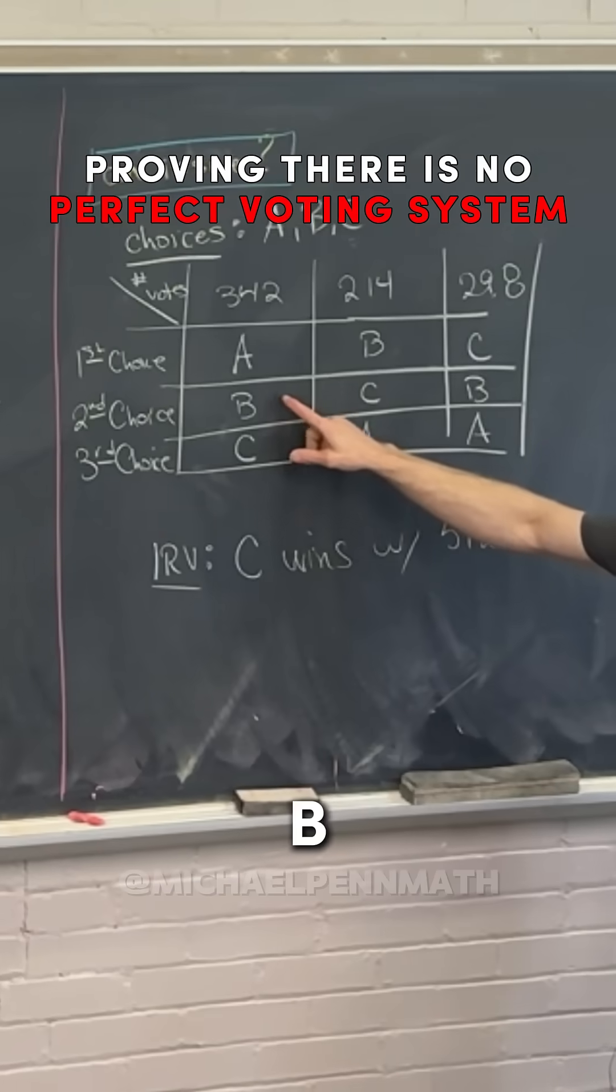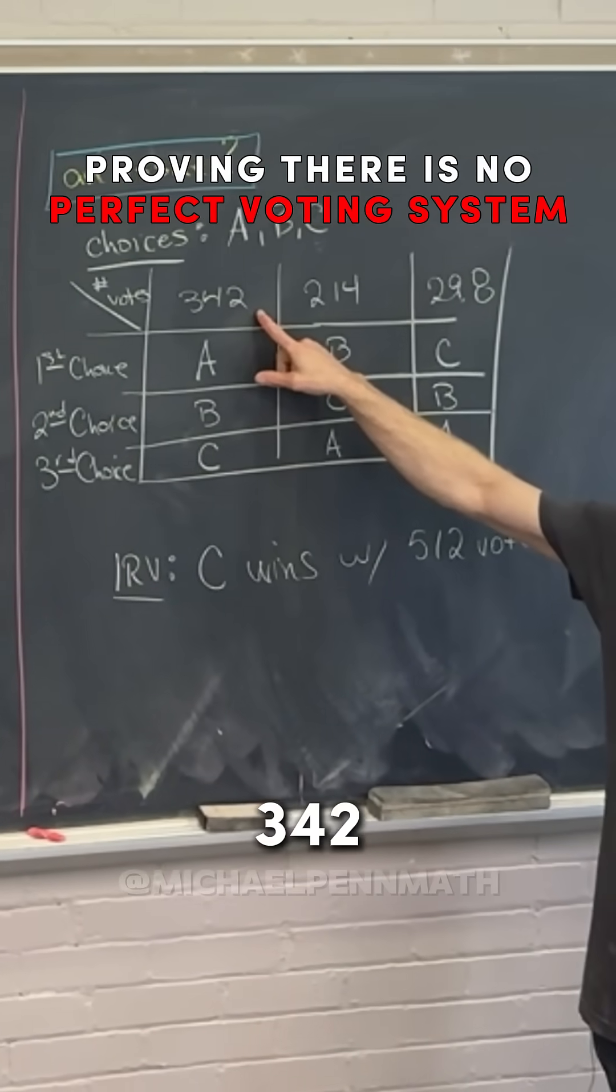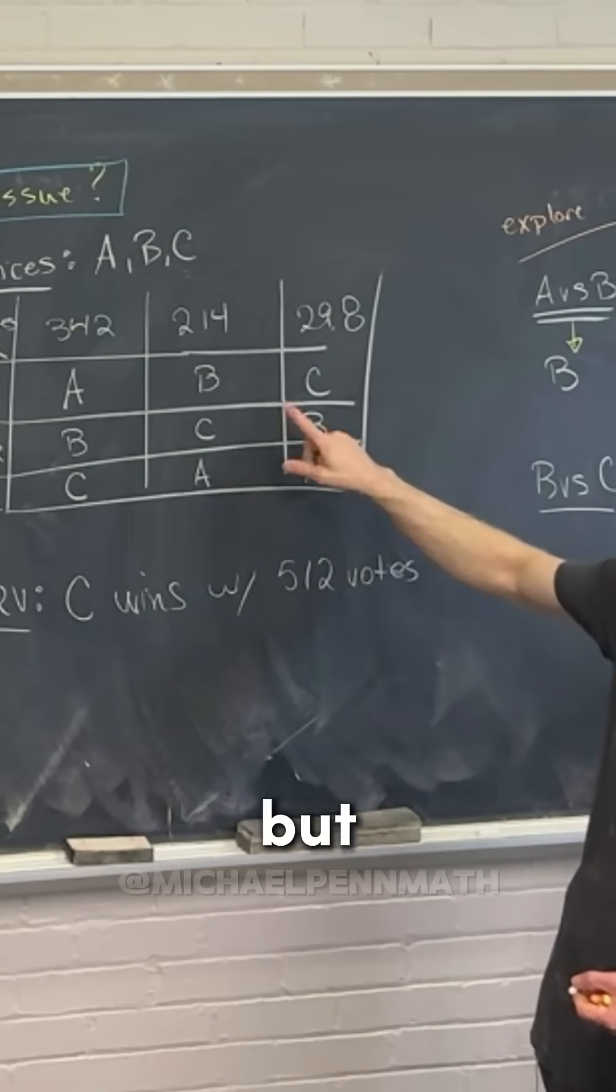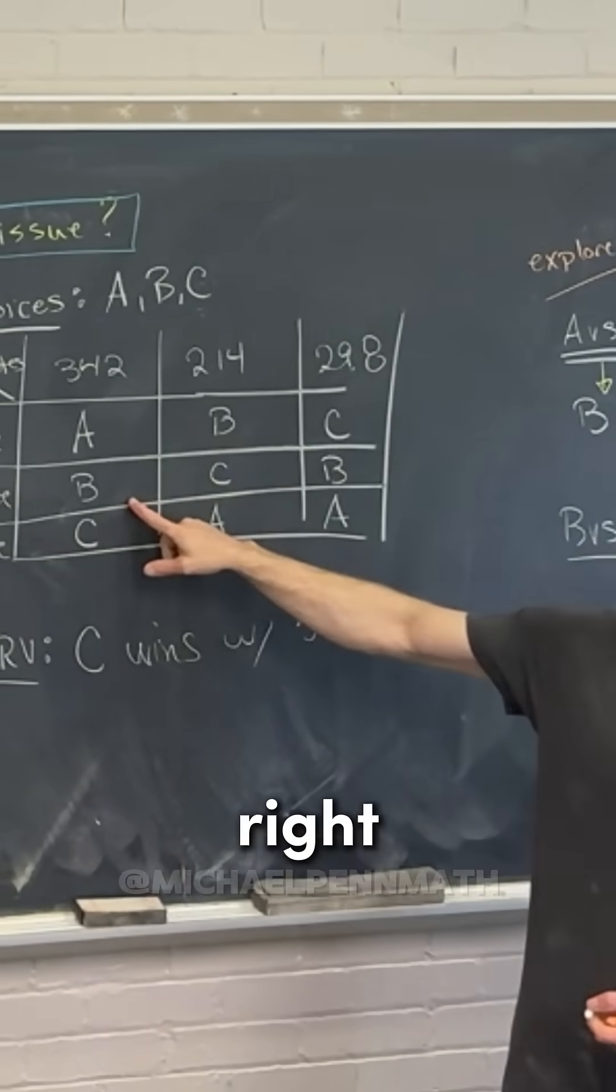So notice B has 342, but C has 298. Notice B wins in both of these.